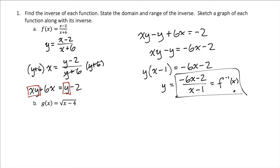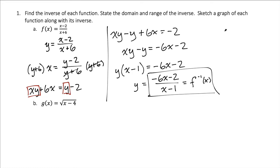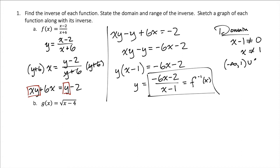Now for stating the domain and range of the inverse: the domain is straightforward. We know that we can't divide by 0, so x minus 1 cannot equal 0. Adding 1 over, we get x cannot equal 1. Writing that in interval notation, that's from negative infinity to 1, union 1 to infinity — note the parentheses at the 1 because we're not including it.